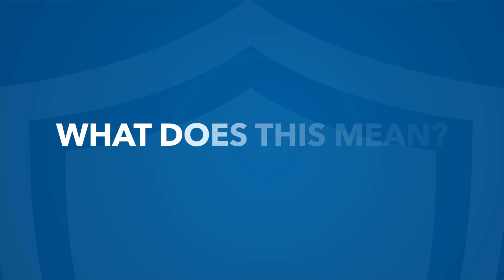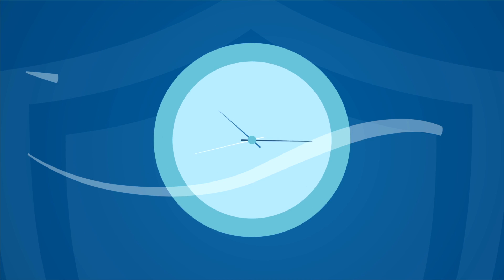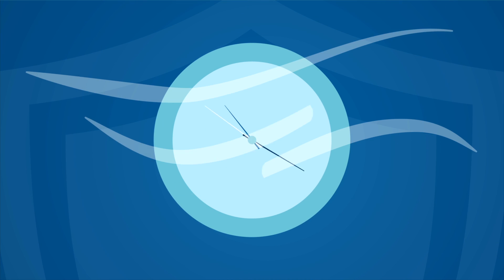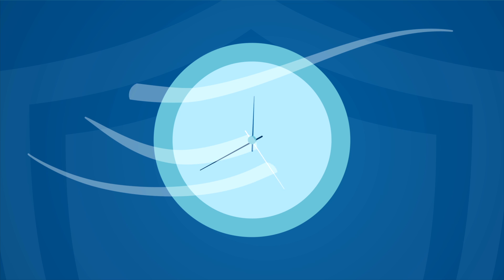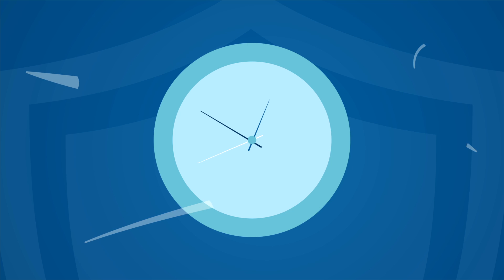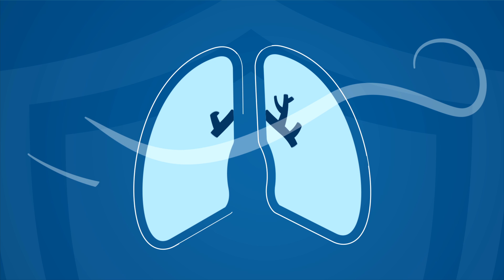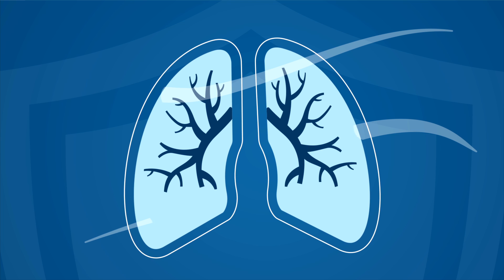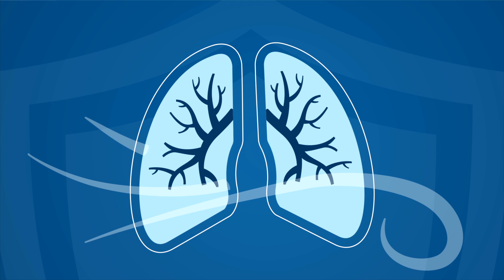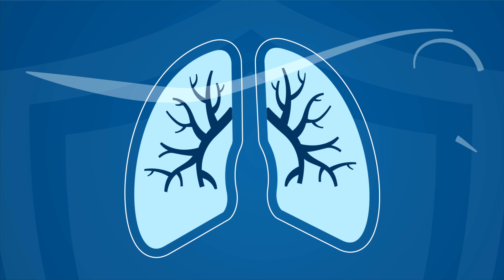But what does that mean exactly? Well, air changes per hour simply means how many times within one hour all the air is fully removed and replaced within the room. Think of this like your lungs — as you breathe in and breathe out, you are replacing old air with fresh air.